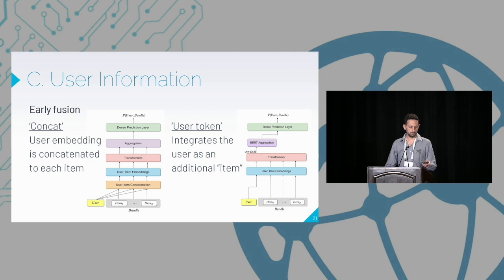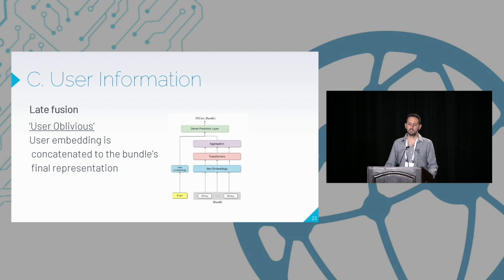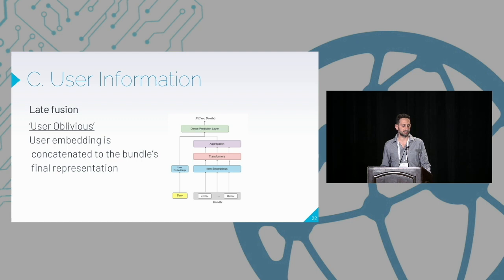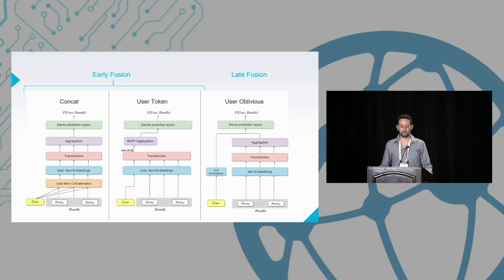For late fusion, we suggest another architecture where we model the whole bundle as one unit, aggregate it into one representation, and then concatenate the user pre-trained embedding. So we learn the bundle first and then concatenate the user afterwards. Overall, these are the three different architectures we are suggesting, each with different manipulation of user information.